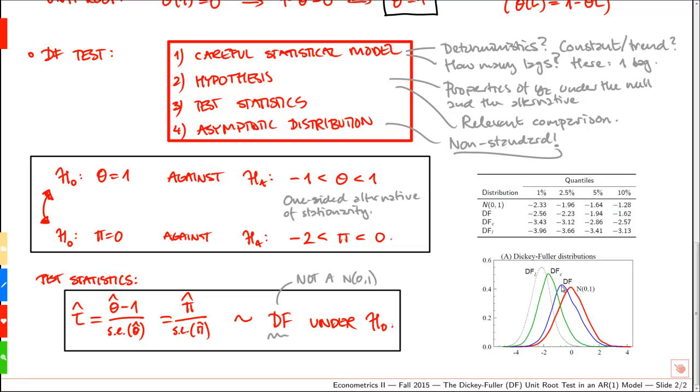Here we have a small plot of the Dickey-Fuller distribution compared to the standard normal distribution. The Dickey-Fuller distribution is the blue line we see here, and note that the distribution has moved a bit to the left. Note also that the quantiles then also move to the left, and because we do a one-sided test, the relevant quantile at 5% level is minus 1.94.